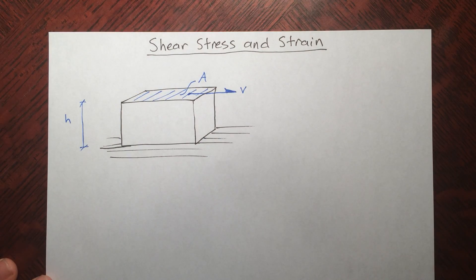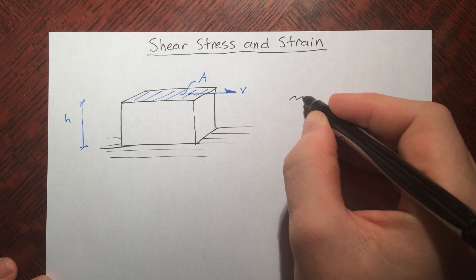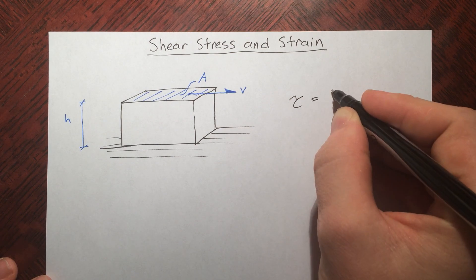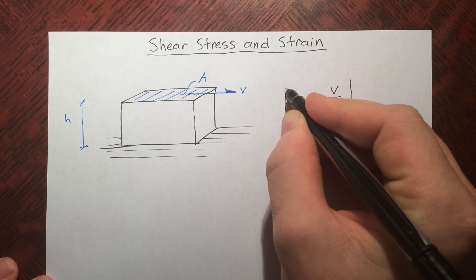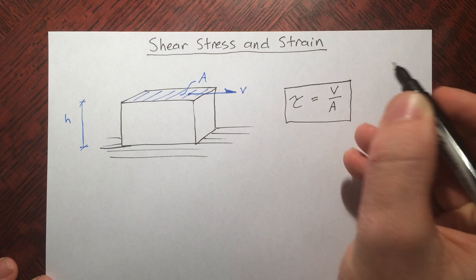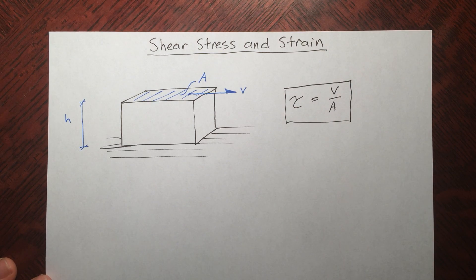Just like any applied normal force like we've seen in the last video, it's N. We define the shear stress as tau equals V over A.